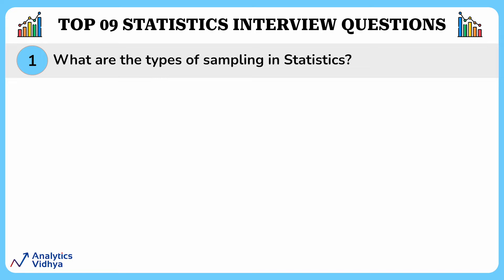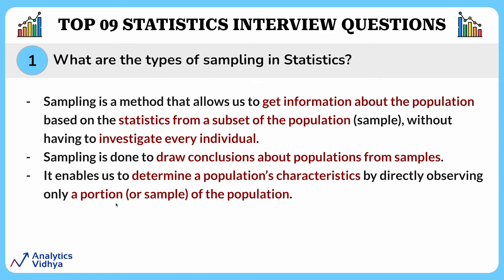Let's begin with a basic level question: what are the different types of sampling in statistics? Before answering that, let us understand what sampling is. Sampling is a method that allows us to get information about the population based on statistics from a subset of the population or sample, without having to investigate every individual. It is a process of selecting a subset of individuals or items from a larger group or population to represent and draw conclusions about the whole.